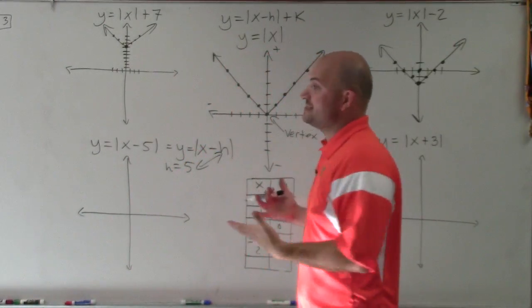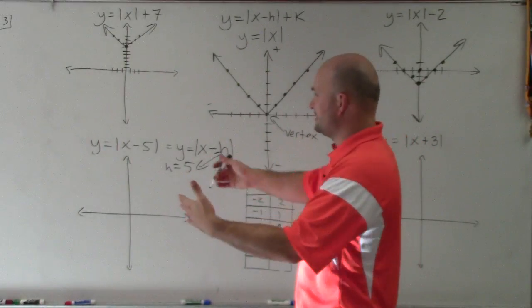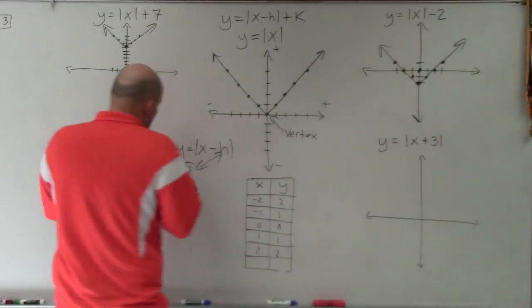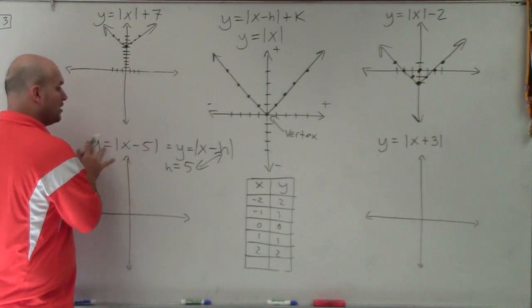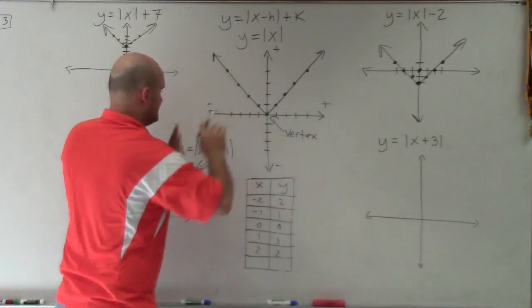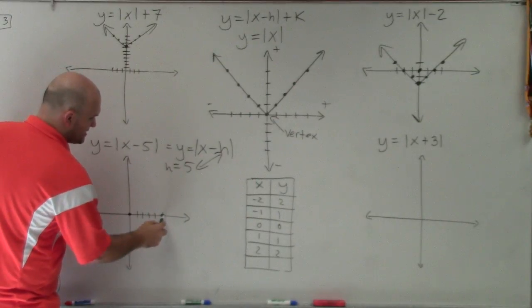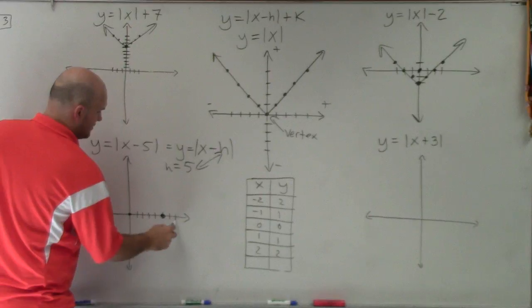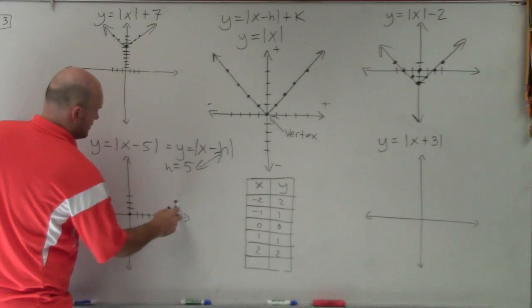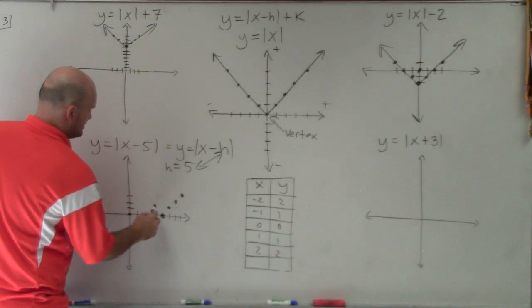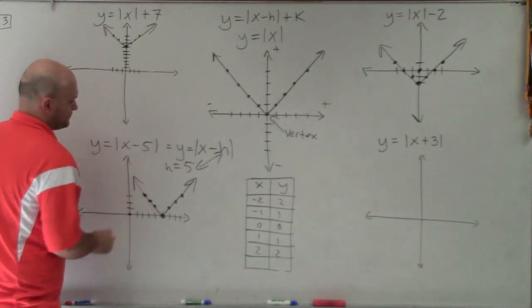The easiest way to remember it: the horizontal transformation is like the opposite. So if you see x minus 5, you're going to be shifting it to the right, because h really is positive 5. So I take my parent graph and shift it over to the right — 1, 2, 3, 4, 5. Instead of the vertex being at 0, I'm moving it to the right, then following the same pattern: over 1, up 1, over 1, up 1, in both directions.